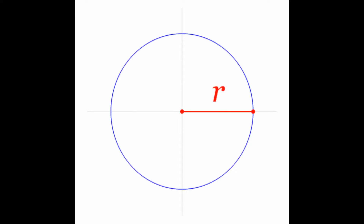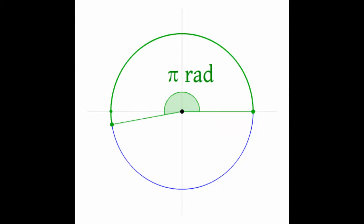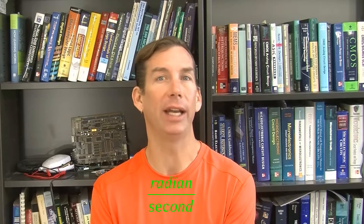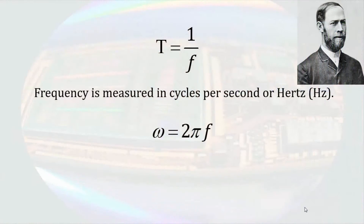Cyclical motion can be discussed in terms of circles, and the motion around the circle can be described in terms of the angle. The standard unit for angular motion is the radian, defined as the angle traversed while sweeping an arc length equal to the radius of the circle. This leads to our unit of cyclical behavior, the radian per second, where angular frequency is equal to 2π times the cyclical frequency, which is usually just called frequency.